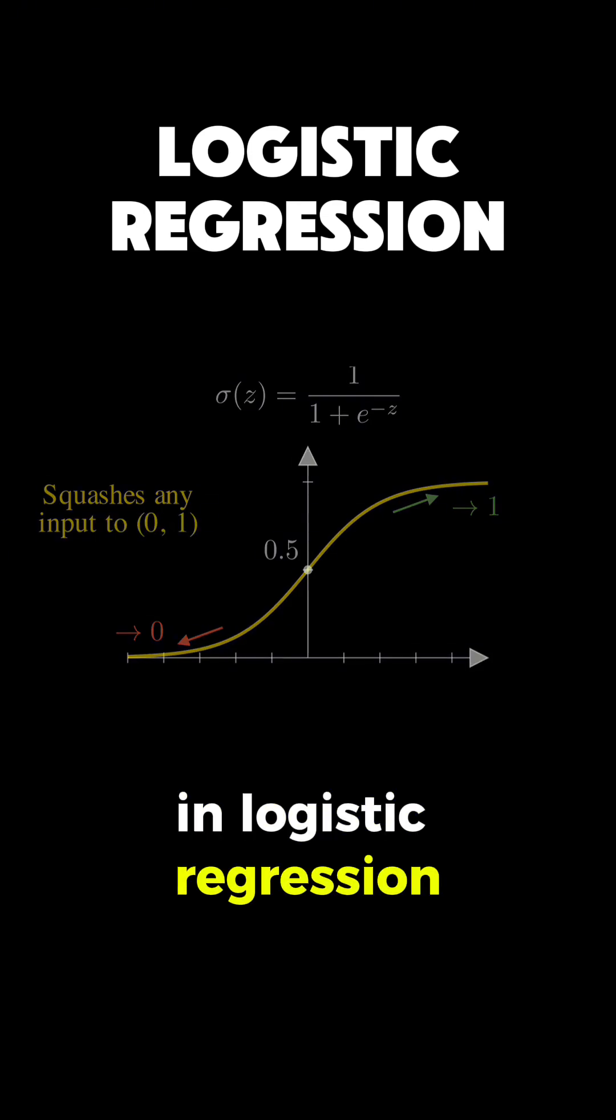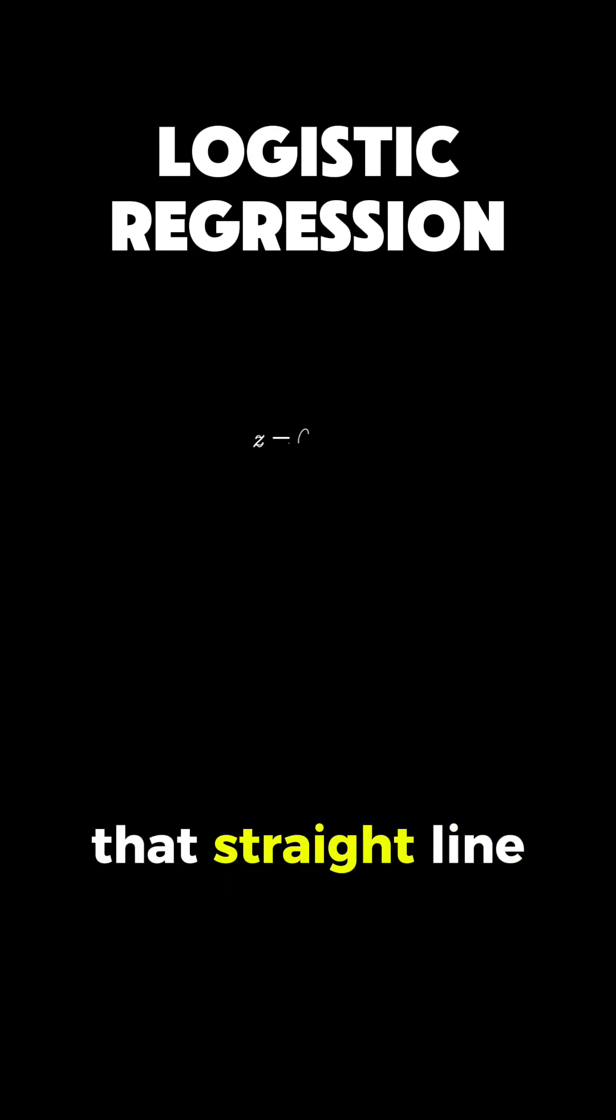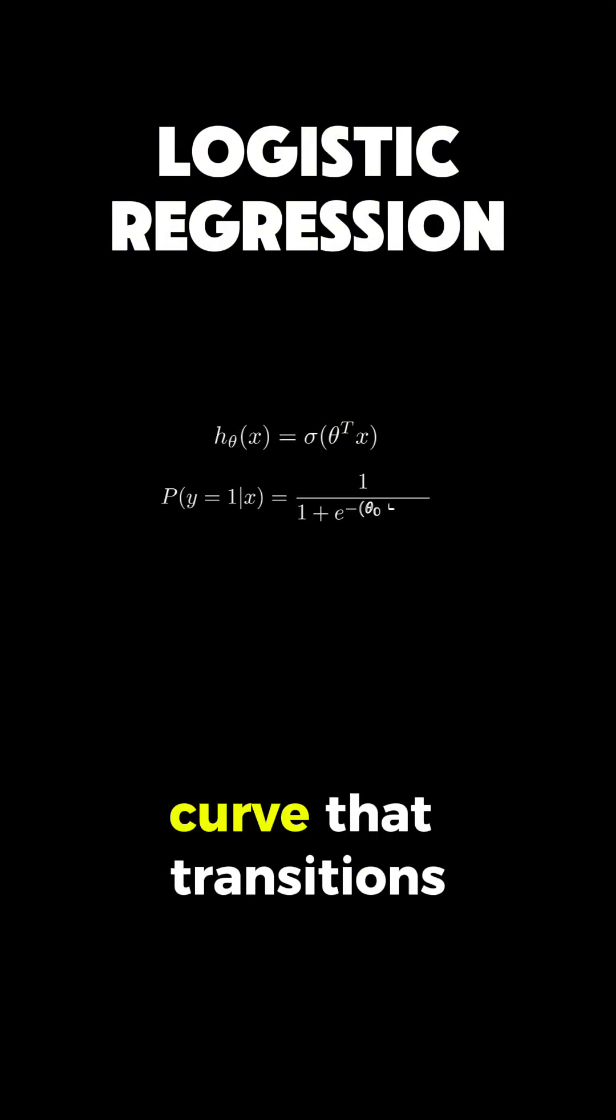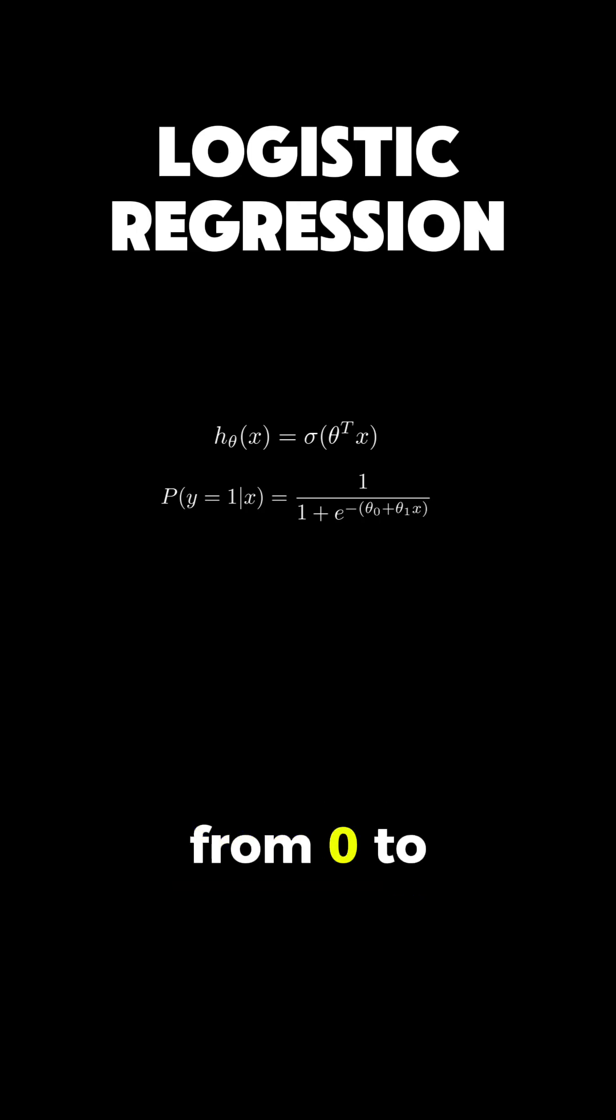In logistic regression, we take our linear predictor, that straight line from before, and wrap it inside this sigmoid function. The result is a smooth curve that transitions from 0 to 1. This allows us to interpret the output as the probability that a student passes the exam.